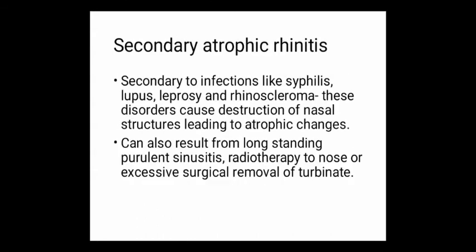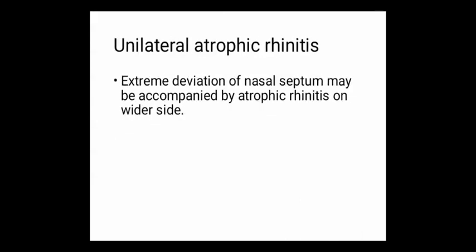Secondary atrophic rhinitis is secondary to infections like syphilis, lupus, leprosy, and rhinoscleroma. These disorders cause destruction of nasal structures leading to atrophic changes. It can also result from long-standing purulent sinusitis, radiotherapy to the nose, or excessive surgical removal of tissue. Unilateral atrophic rhinitis can occur in cases of extreme deviation of the nasal septum, accompanied by atrophic rhinitis on the wider side.